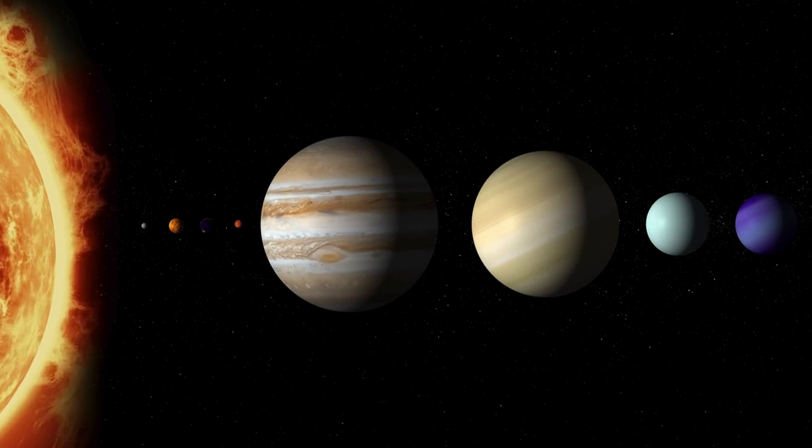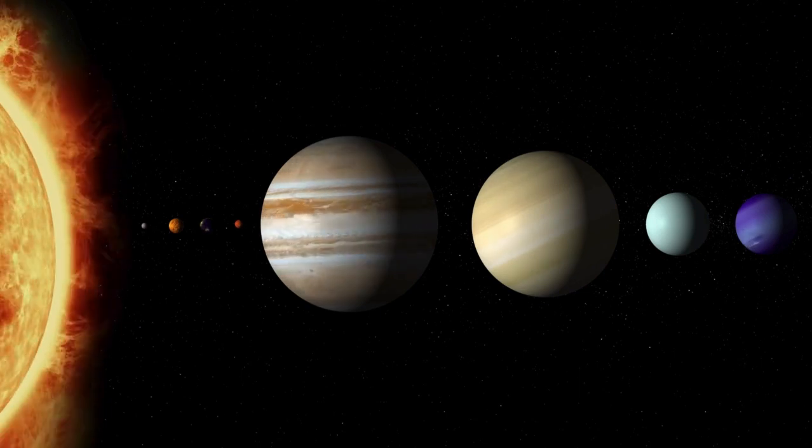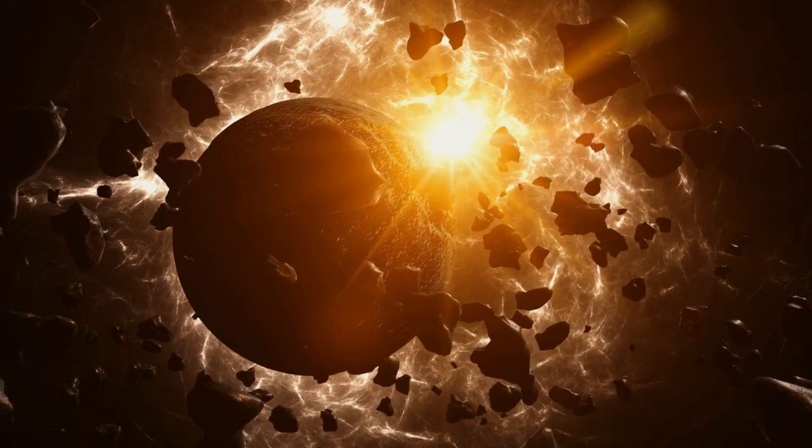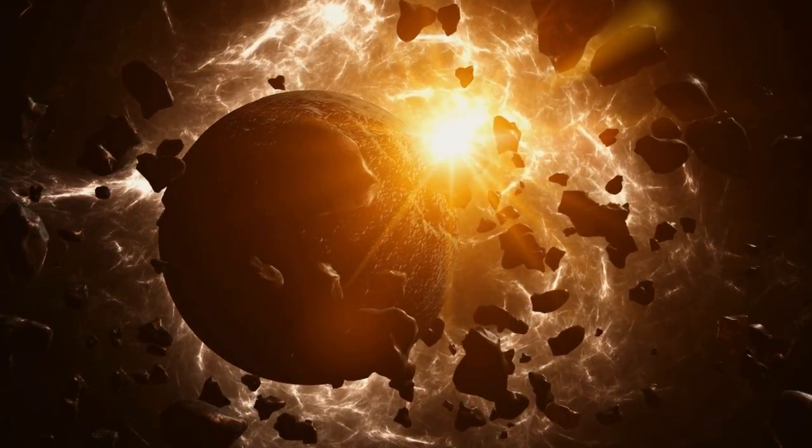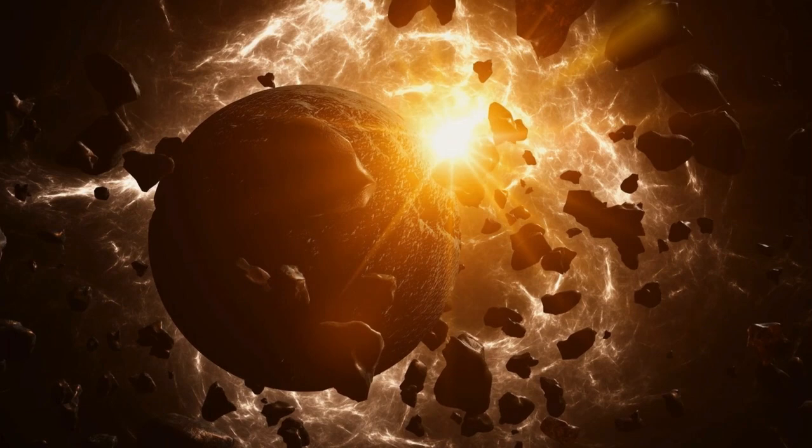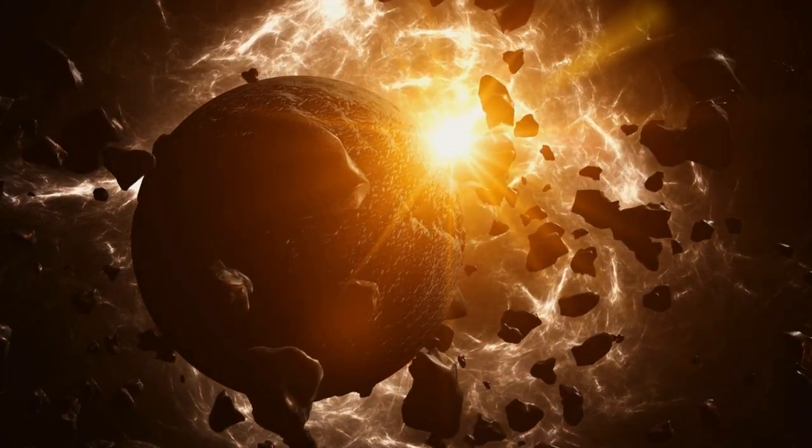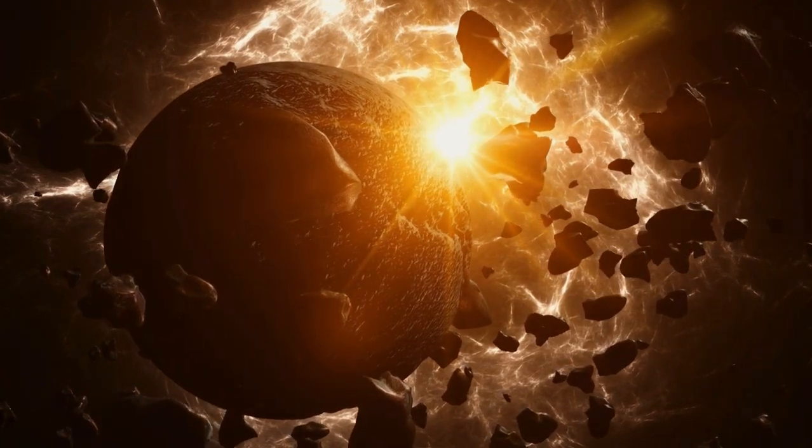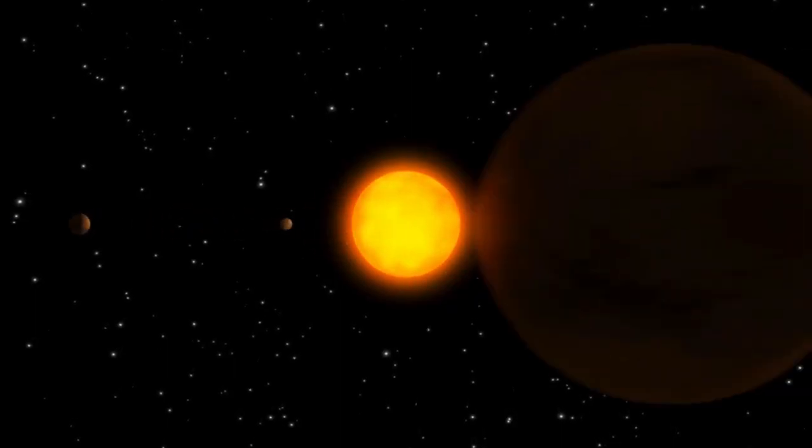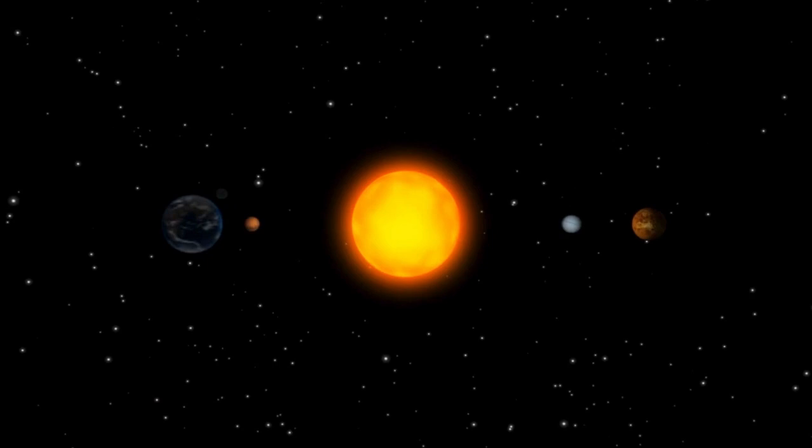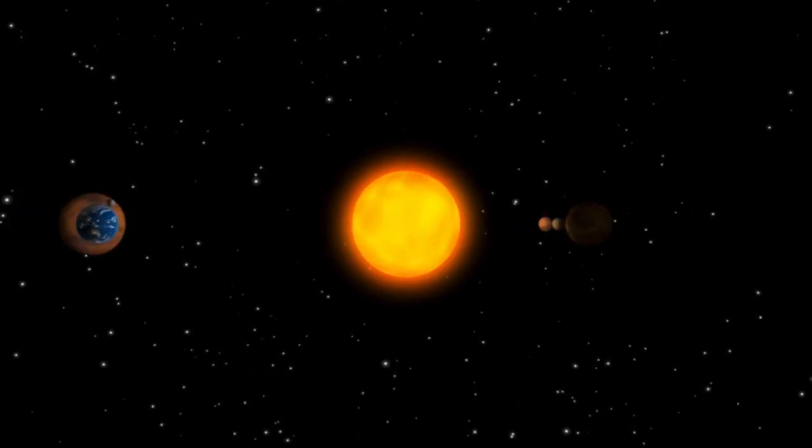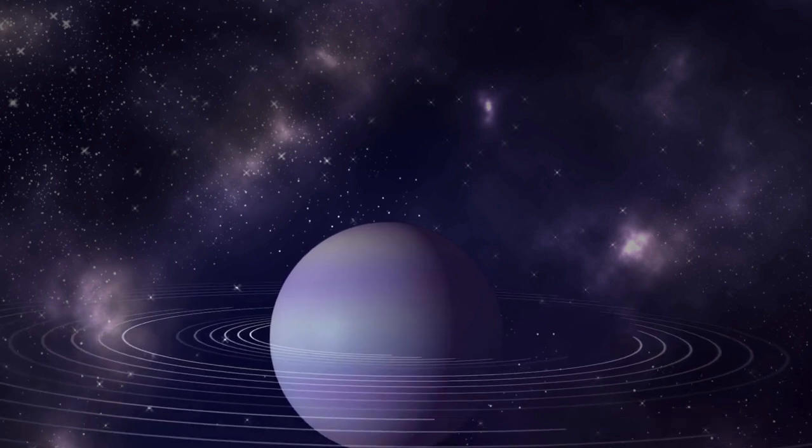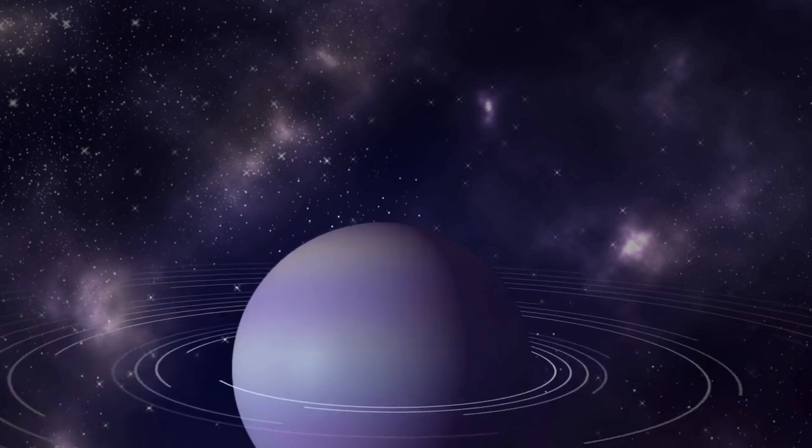One such instrument is the James Webb Space Telescope, JWST, designed to be launched in the near future. The JWST's advanced capabilities will allow researchers to study exoplanets with phenomenal accuracy, offering new opportunities to identify signs of life beyond our solar system. The telescope's ability to analyze the atmospheric composition of exoplanets could provide vital insights about their livability. For instance, the presence of specific gases like oxygen, methane, or water vapor could indicate life processes on the planet's surface.